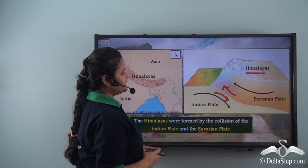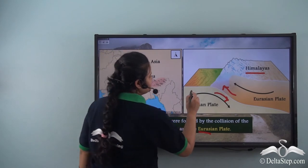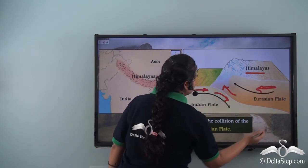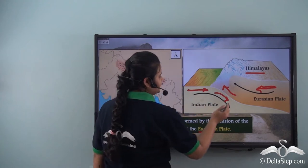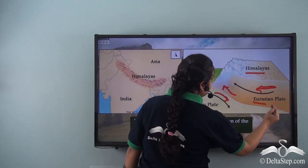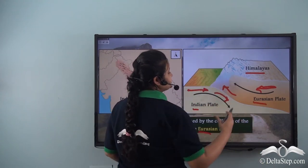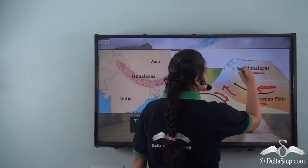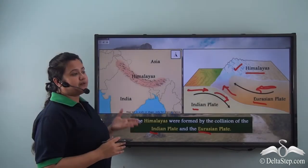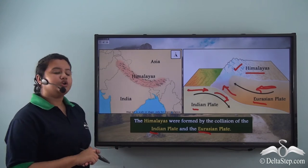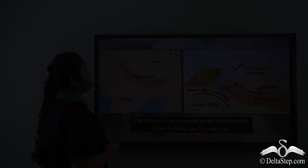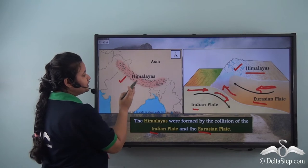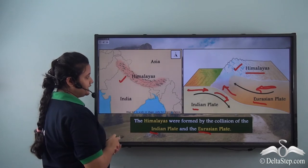Due to the convergence of the Indian plate and the Eurasian plate, the overlying rocks crumbled and led to the formation of the Himalayas. This map shows the location of the Himalayas — the Himalayan range is located in the north and northeastern part of India.